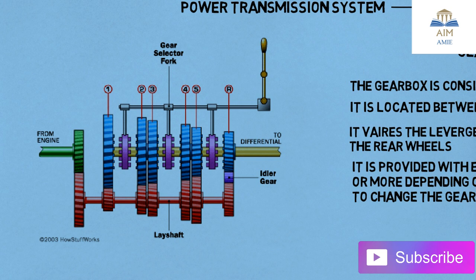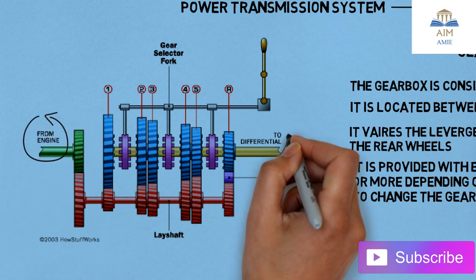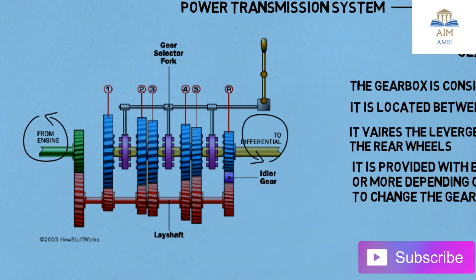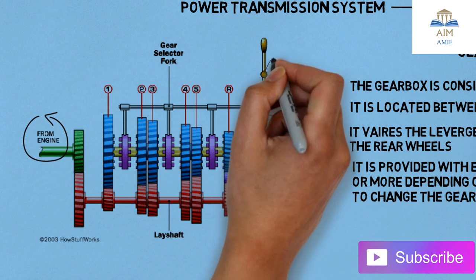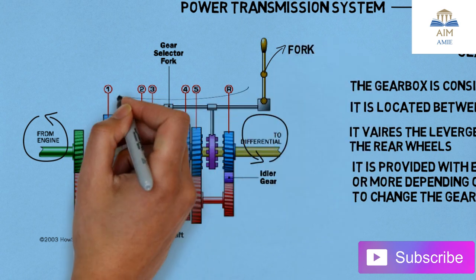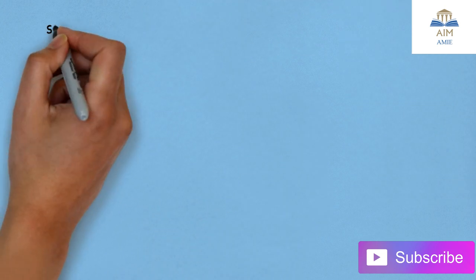In this image, this is the front view of the gearbox. The power is transmitted from the engine to the differential of the automobile. Over here we have the gear selector fork mechanism — from this lever we can change or shift the gears. In this case we have five gears plus reverse.